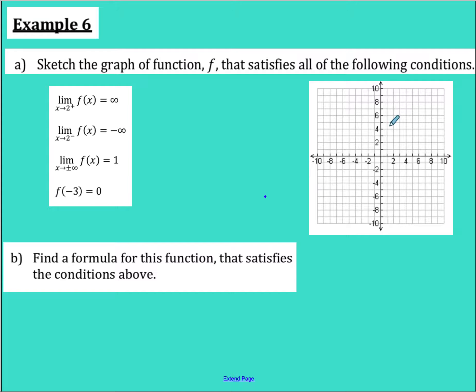So as I get close to two from the right, I'm going to infinity, and as I get close to two from the left, we're going to negative infinity. This should be a hint to you guys that this is a vertical asymptote. Anytime there's an infinity involved, it's either a vertical or horizontal asymptote.